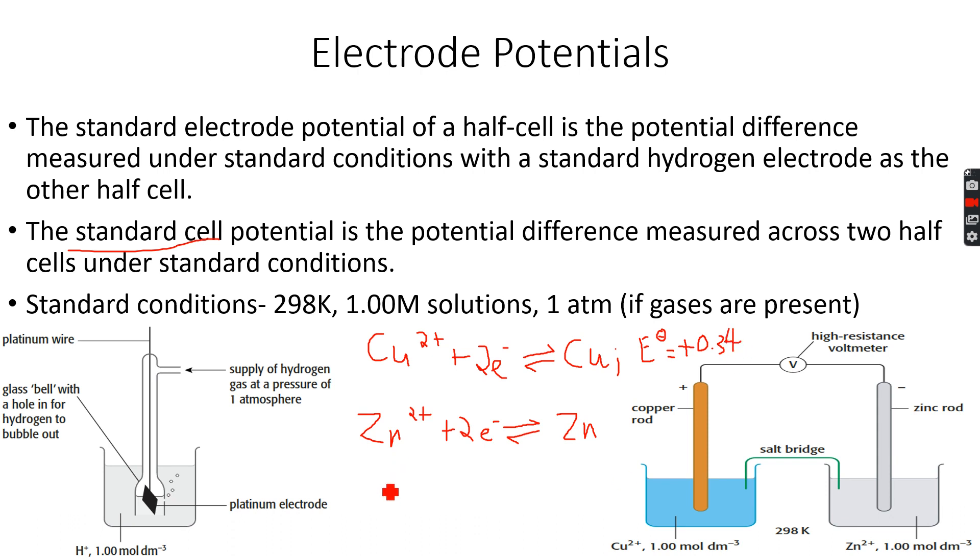The E0 value for the zinc cell, which is Zn2+ plus 2e- gives Zn, is equal to minus 0.76 volts.